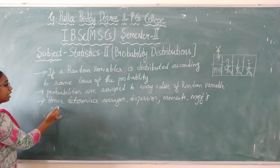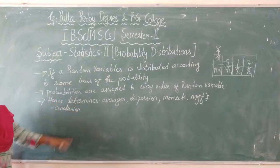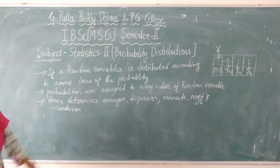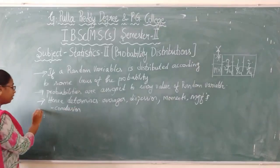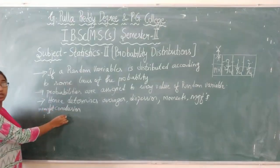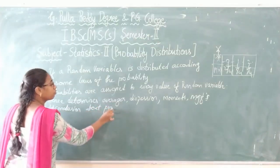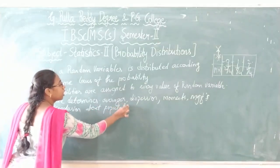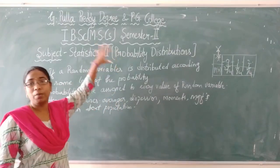All these — averages, dispersion, moments, and MGF — are useful to draw meaningful conclusions about the population. So this is about our paper title, that is Probability Distributions.